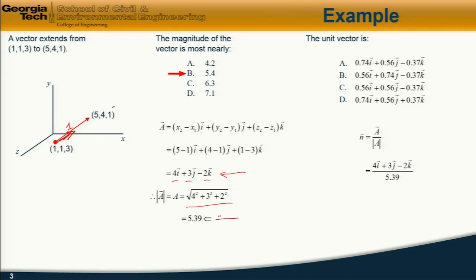And the magnitude of the vector we've already calculated is 5.39. So computing out those coefficients, we find that that is equal to 0.74 plus 0.56j minus 0.37k. And the answer is a.